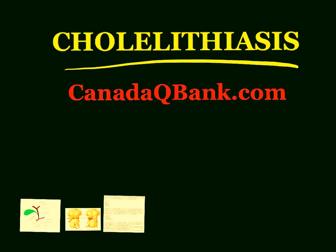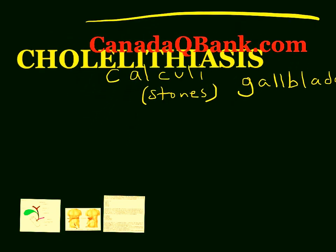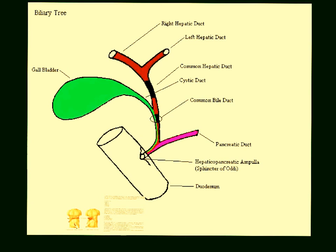Cholelithiasis is the topic for this presentation. Cholelithiasis by definition is calculi or stones in the gallbladder. The gallbladder is a very important structure. Here we go — this is the biliary tree, and the liver is part of this anatomy. What's important is this network of ducts. First, here you have the gallbladder, and the stones will be sitting inside the gallbladder — that's the definition of cholelithiasis.